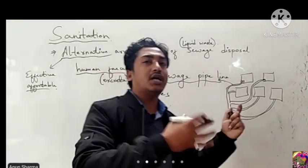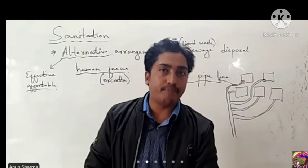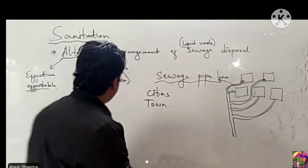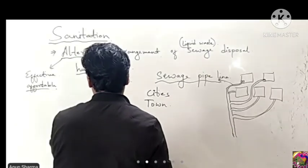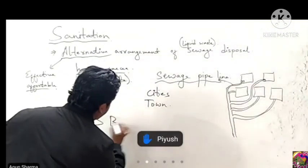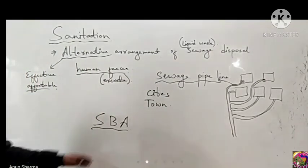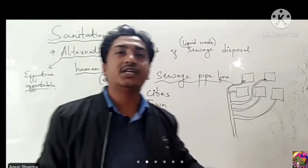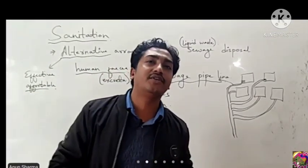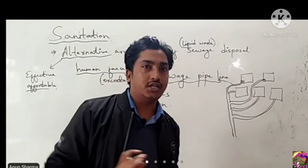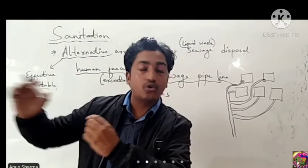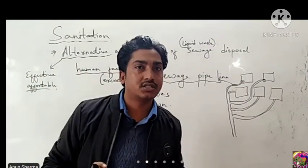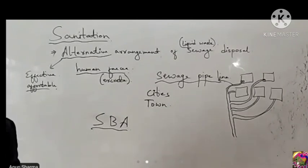In villages, people used to go in open fields or on river banks for defecation. But nowadays, due to Swachh Bharat Abhiyan, the Government of India has proposed that each and every household should have a toilet and should not use open fields for defecation. To improve sanitation, low-cost on-site sewage disposal systems are being installed.